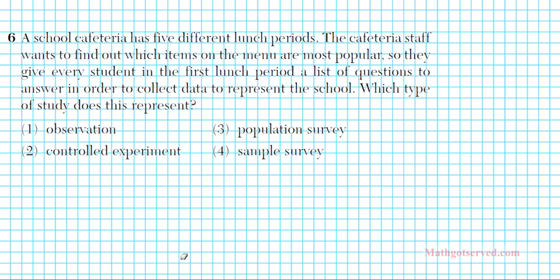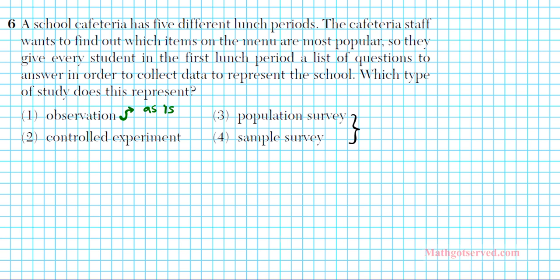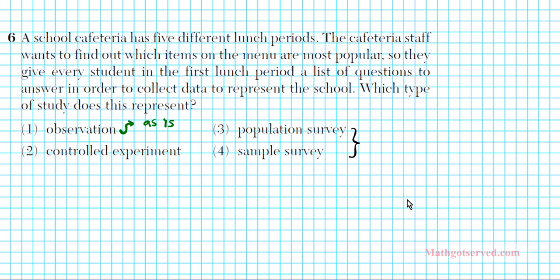We can group them into 3 categories. These 2 are surveys, we have observation, and then we also have experiments. Observation involves observing data as is — you are observing what you are studying just the way it is, not altering it in any way shape or fashion. Observation involves inspecting the population study as it is.